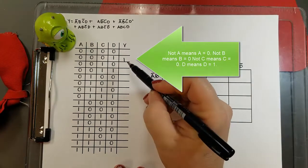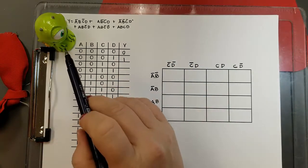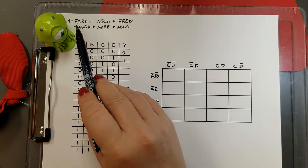Now I'm going to mark that off since I didn't do them in order. And now I'll put a 0 for not A, not B, not C, not D, because we don't have that term.